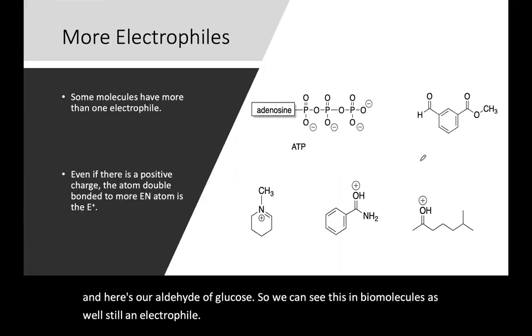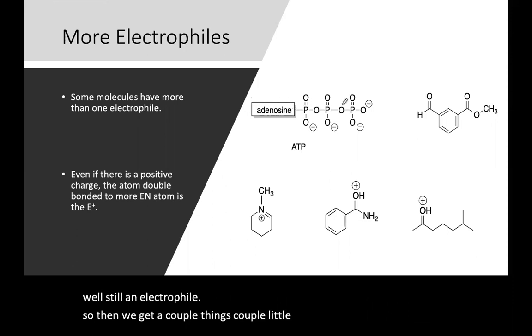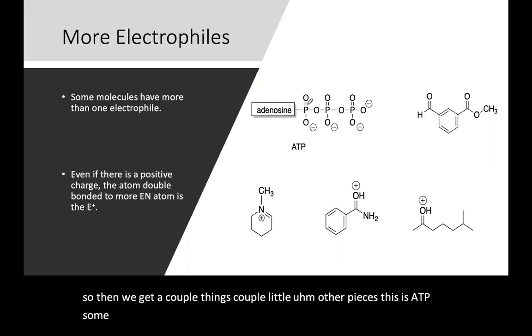So then we get a couple other pieces. This is ATP. Some molecules have more than one electrophile, so we can see in different settings that each of these phosphorus atoms could react as an electrophile.